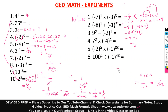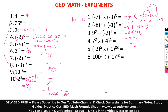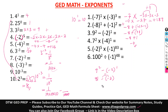Number 3: 9 squared minus, in parentheses, negative 2 raised to the power of 1. Nine squared is 81. Negative 2 raised to power 1 is negative 2. Subtracting a negative is the same as adding: negative times negative gives positive. So that's 81 plus 2, which gives us 83.